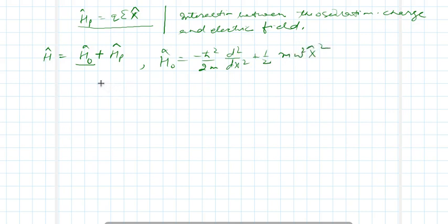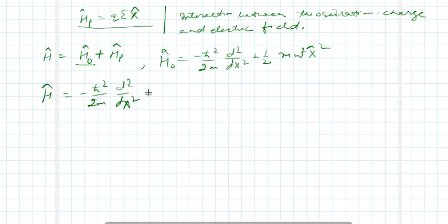Therefore, the Hamiltonian of the full system which we have considered is equal to minus ℏ²/2m · d²/dx² plus ½mω²x² plus qεx.